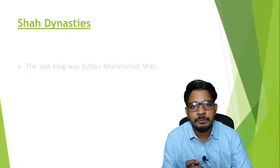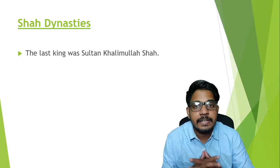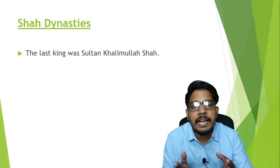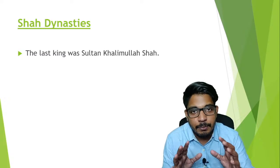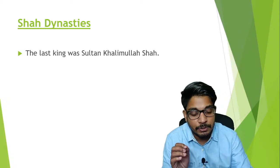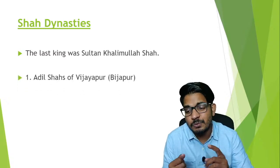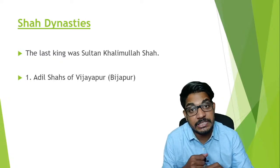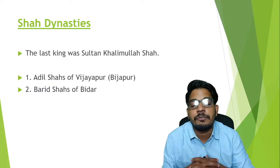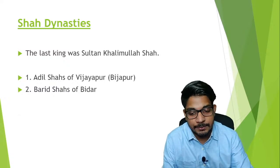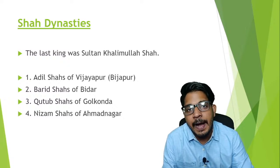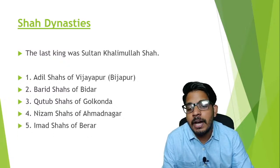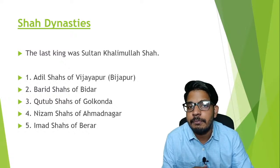The last king of the Bahmani Sultanate was Sultan Kalimullah Shah. After that the Bahmani kingdom was divided into five principalities: the Adil Shahs of Vijapur, the Barid Shahs of Bidar, the Qutb Shahs of Golconda, the Nizam Shahs of Ahmadnagar, and the Imad Shahs of Berar. These are the five principalities that came into existence after the decline of the Bahmani kingdom.